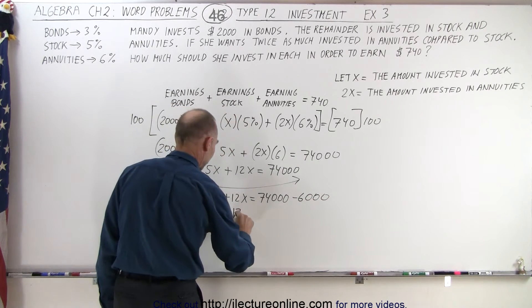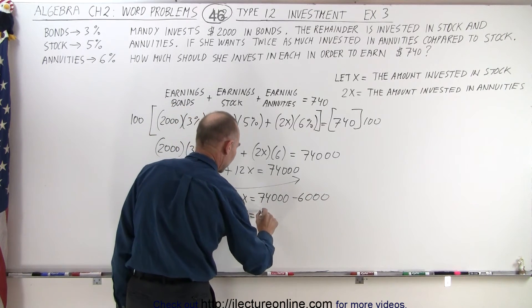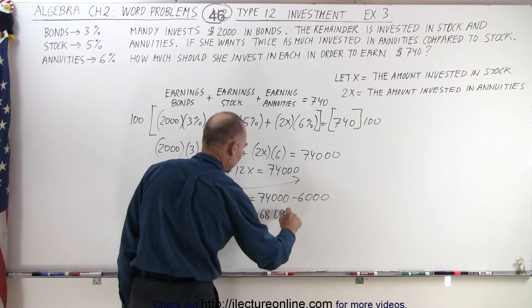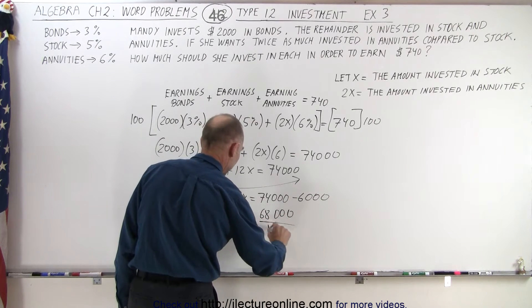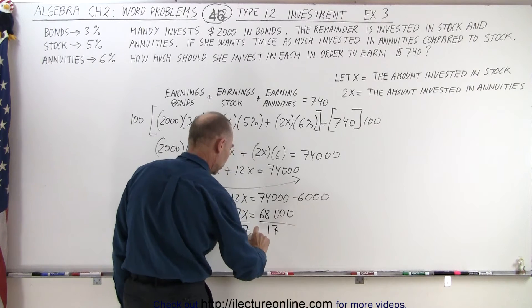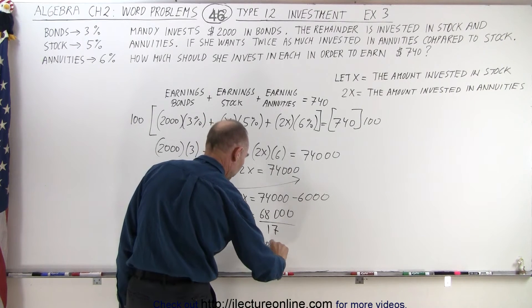Combining like terms, we get 17X is equal to 68,000. Divide both sides by 17, we get X is equal to 4,000.